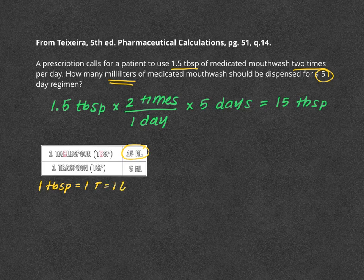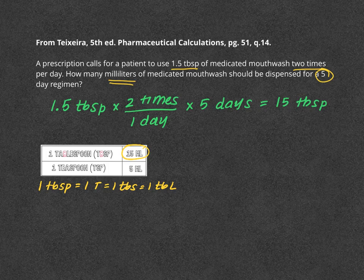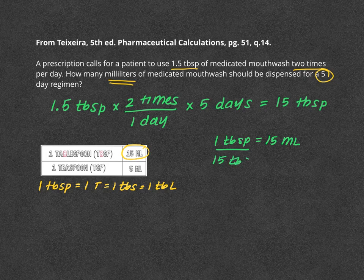It's also the same as TBS or TBL — just semantics. Now, going back to solving the problem, we set up a ratio to convert our 15 tablespoons to milliliters. We know that one tablespoon equals 15 milliliters, so if we have 15 tablespoons, we solve for X milliliters.